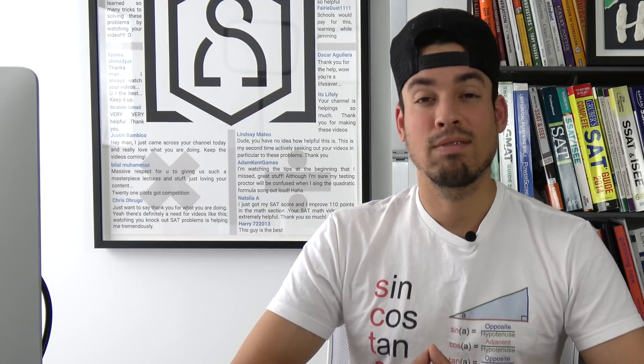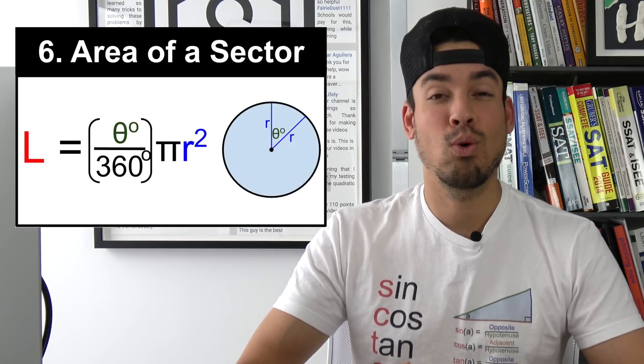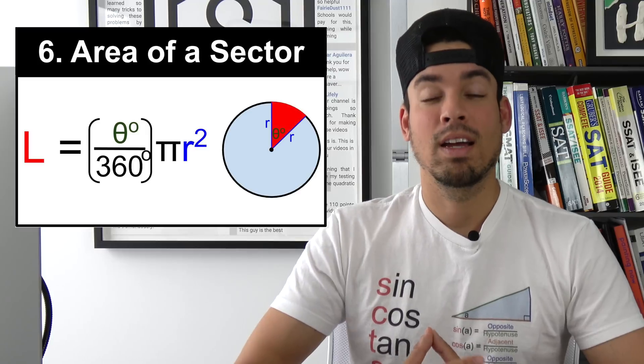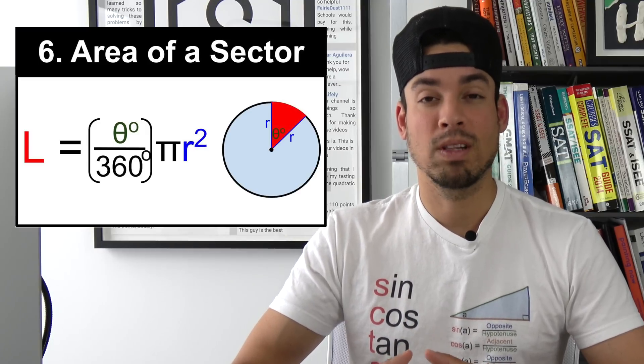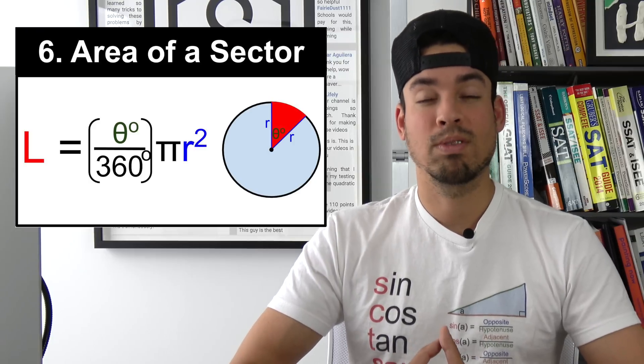Next we have area of a sector. So if arc length is like the crust, area of a sector is like the whole slice of the pizza. And the theta in this formula represents the central angle and of course r represents radius.